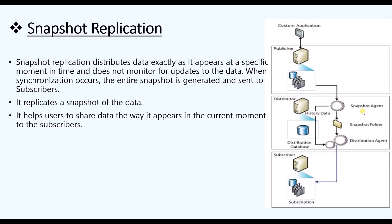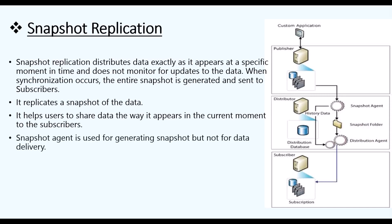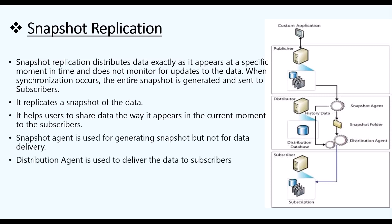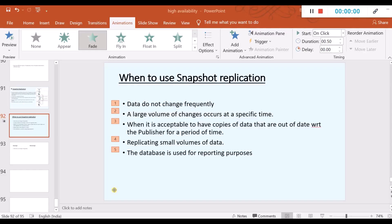We have here a Snapshot Agent, Distribution Agent, and a Snapshot Folder. What the Snapshot Agent does is it is used for generating the snapshot, but not for data delivery. The Distribution Agent is used to deliver the data to the subscriber.